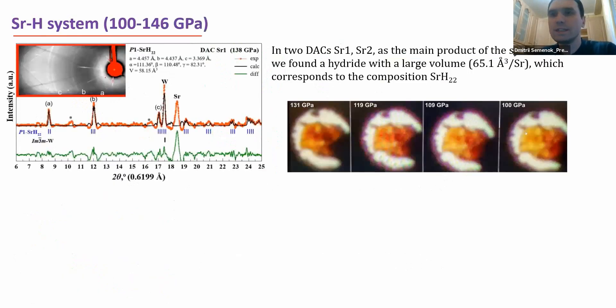I would like to start from the most interesting example. It's strontium H22 that we firstly predicted about two years, maybe one year before its experimental synthesis in 2020. So in order to obtain this compound, we loaded two diamond anvil cells with pure strontium metal and ammonia borane, and with strontium dihydride and also ammonia borane. After laser heating at such high wavelength, we observed the significant shift of diffraction peaks marked here A, B, and C to the low angle region, which corresponds to formation of new compounds in strontium hydrogen system with very large unit cell volume, about 65 cubic angstrom per strontium atom.